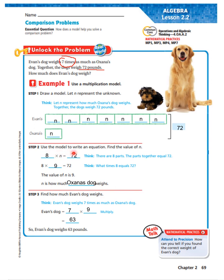Now it says use the model to write an equation and find the value of N. We know that there are eight boxes total — seven for Evan's dog and one for Oxana's dog — because Evan's dog weighs seven times as much as Oxana's. That's how we get eight times N equals 72. There are eight parts; the parts together equal 72. Eight times nine equals 72, so the value of N is nine. Oxana's dog weighs nine pounds.